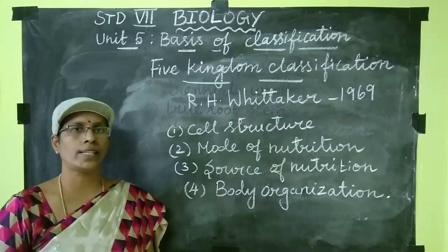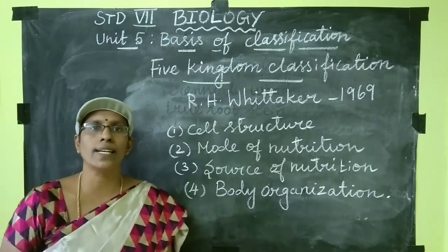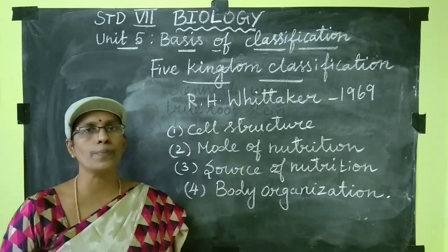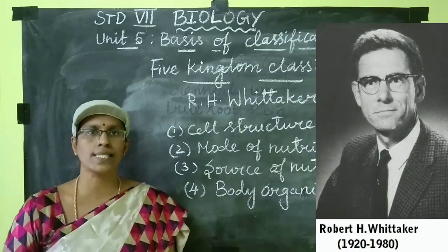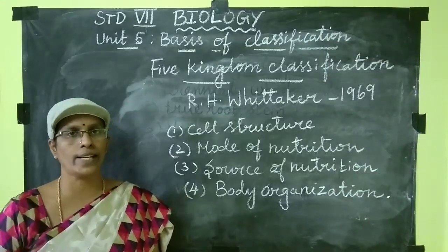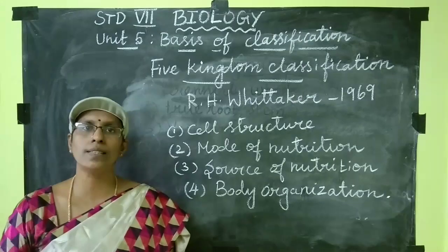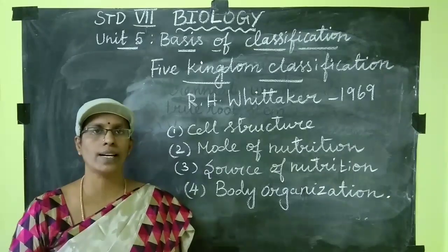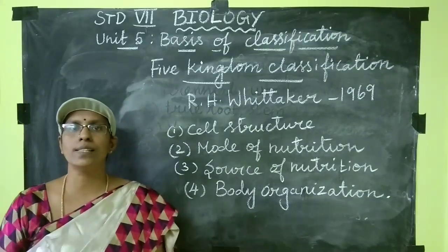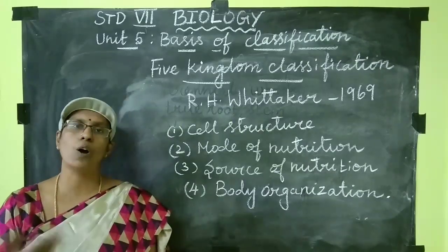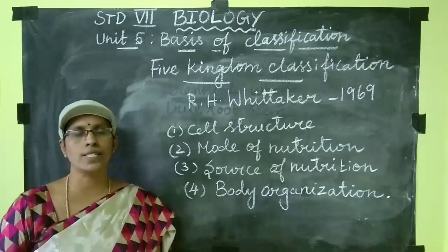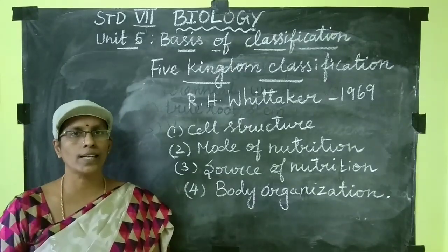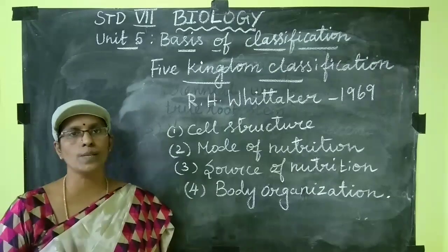Several scientists have attempted to classify organisms. The most widely accepted classification is the five kingdom classification, proposed by R.H. Whittaker in 1969. He classified organisms based on characteristics such as cell structure (prokaryotic or eukaryotic), mode of nutrition (autotrophic or heterotrophic), source of nutrition, and body organization (unicellular or multicellular, tissue level, organ level).